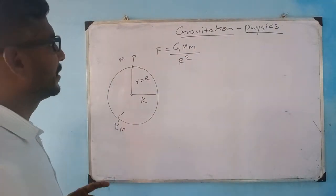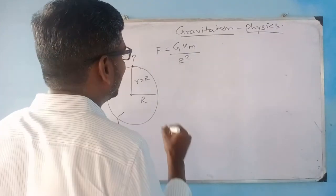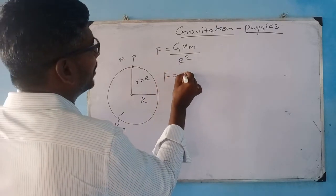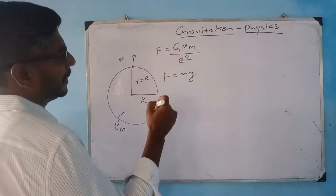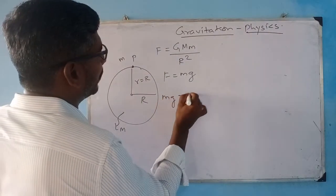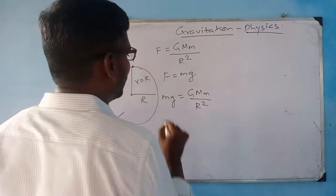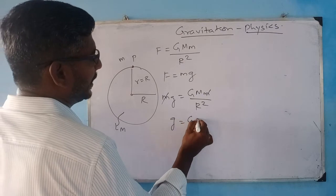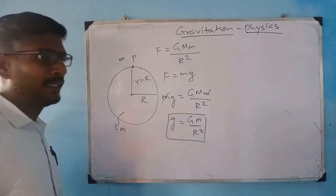If I relate this with the force acting towards the Earth — that is the force due to acceleration due to gravity, F equal to M into g — I am equating these two equations to find acceleration due to gravity. M·g equals G·M divided by R squared. So M and M get cancelled, giving g equals G·M divided by R squared, which is my important relation.